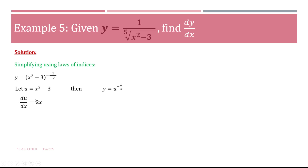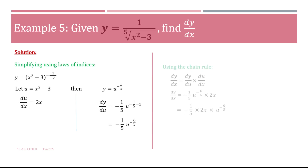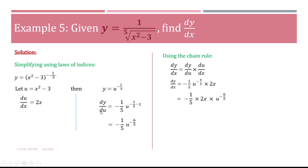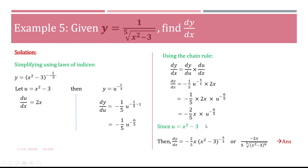Differentiating each one separately: du/dx — the differential of x² gives 2x and the differential of minus 3 is 0, so du/dx equals 2x. Then dy/du: bringing the power to the front and subtracting 1 gives minus 1/5 · u to the power of minus 6/5. We leave it as an improper fraction, not a mixed number. Substituting into the chain rule and multiplying minus 1/5 by 2x gives minus 2/5 · x · u to the power of minus 6/5. Re-substituting u equals x² minus 3 gives the answer.